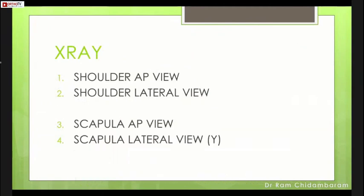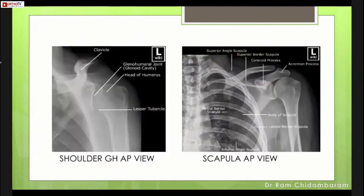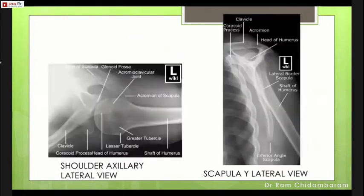Classically, four X-rays have been described. The shoulder AP X-ray differs from the scapular AP X-ray taken in a tilted manner, which allows you to see the scapula in profile with the clavicle and acromion. It is mandatory to do two lateral views: the shoulder axillary lateral view to check the glenohumeral articulation, and the scapular Y-view to see the alignment of the scapular blade with the anterior and posterior processes.